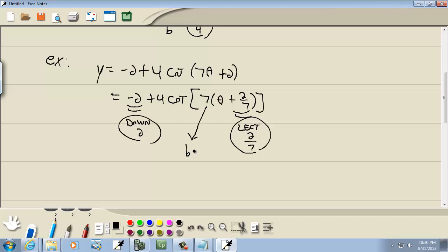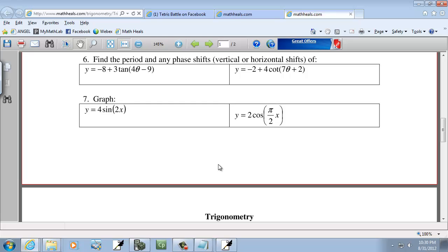And then this is our B. So our period for cotangent, remember, is pi over B. So we're going to have pi over 7. And that's our last example of that.